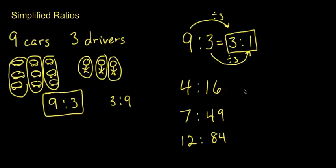You should have stopped the video and tried working these out, so let's see how you did. Again, we're looking for the greatest common factor that goes into both of these numbers. The greatest common factor that goes into 4 and 16 is 4. So 4 divided by 4 gives me 1, and 16 divided by 4 gives me 4. My simplified ratio is 1 to 4.